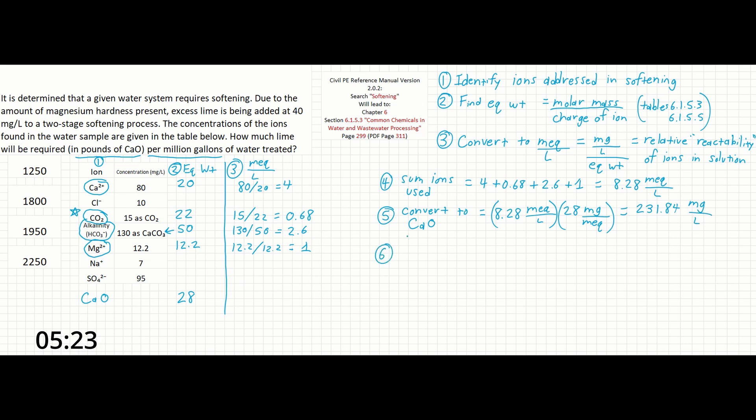For step 6, the problem mentions that excess lime is being added at 40 milligrams per liter in this two-stage softening process. So now that we are back in the correct units, we can add the 40 milligrams per liter of lime to our 231.84. And this is going to give us a total of 271.84 milligrams per liter.